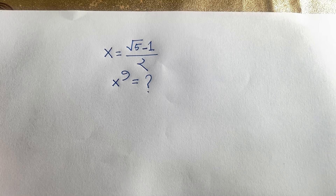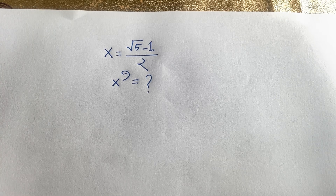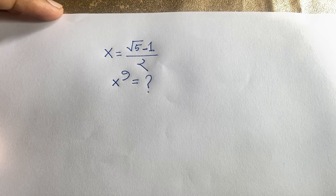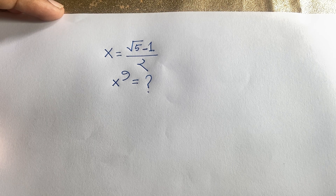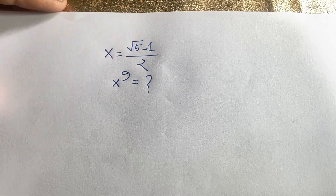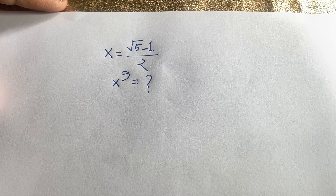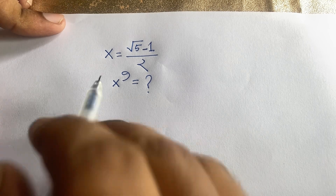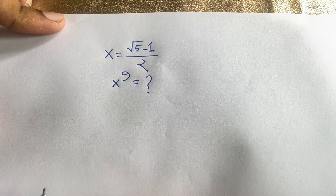Hello everyone. How to solve this tricky math question: x is equal to square root 5 minus 1 over 2, and x to the power 9 is equal to what? This is an interesting math question because of the square root 5. First of all, x is equal to square root 5 minus 1 over 2.